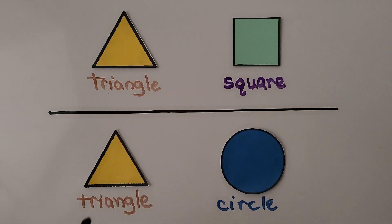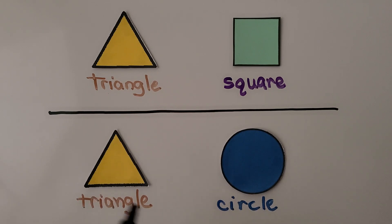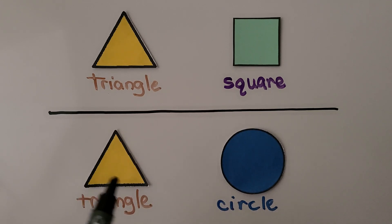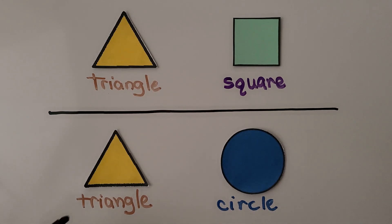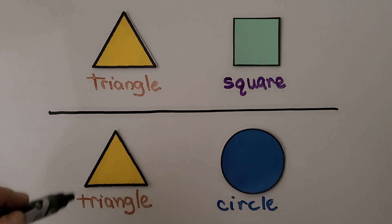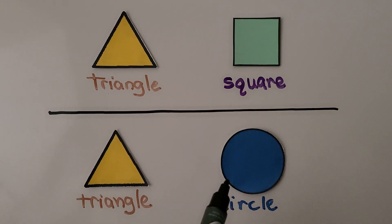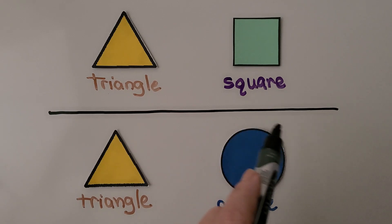Here we have a triangle and a circle. A triangle and a circle are the same because they're both two-dimensional shapes, meaning they're both flat shapes. And a triangle and a circle are different because a triangle has straight sides and a circle curves.